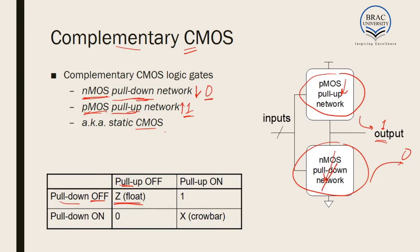In case of CMOS, if the circuit is rightly designed, this floating condition is not supposed to happen. Now if the pull-down network is off — that is, no current can flow through this side — the output can never be zero. But if the pull-up network is on, current flows in this direction and the output will be one. As a result, the output is one.